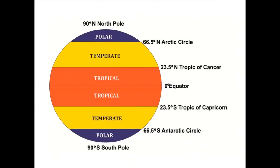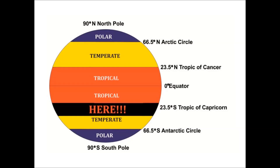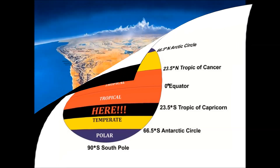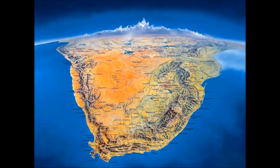South Africa is located between 20 and 35 degrees south of the equator in the temperate latitudes, so we generally experience good weather throughout the year and temperatures are never excessively high nor excessively low. In order to understand the last factor of elevation, we need to first have a look at the main geographical features of the country.